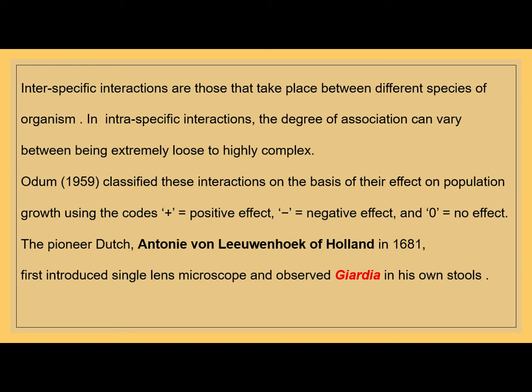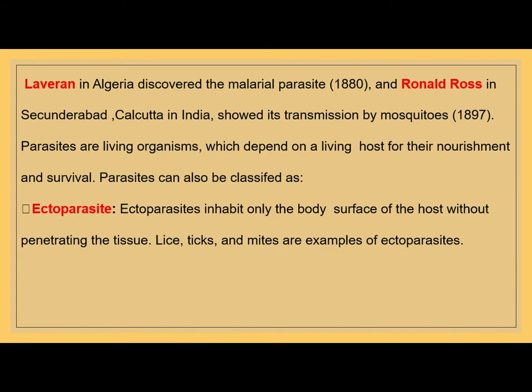The pioneer Dutch Antony van Leeuwenhoek of Holland in 1681 first introduced the single-lens microscope and observed Giardia in his own stools. Later, Laveran in Algeria discovered the malarial parasites in 1880, and Ronald Ross in Secunderabad, Calcutta, India showed its transmission by mosquitoes in 1897. That is, a vector.